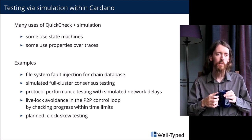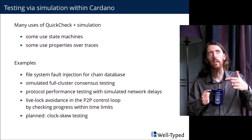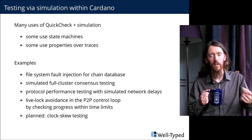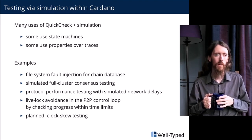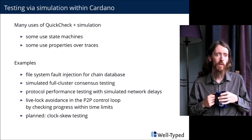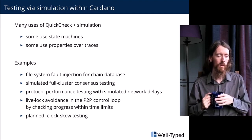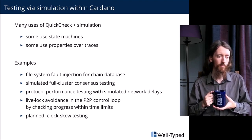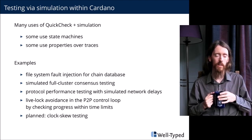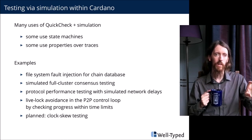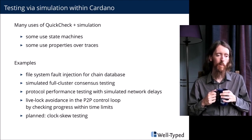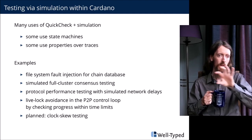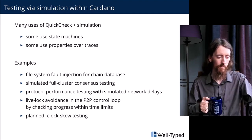One thing we're planning to do but haven't done yet is testing with different clocks in different time domains — different nodes might have wall clocks off by some number of seconds. The monotonic clock is always the same, but we want to be able to test the behavior of algorithms when communicating between nodes that have a slightly offset notion of what the current time is.